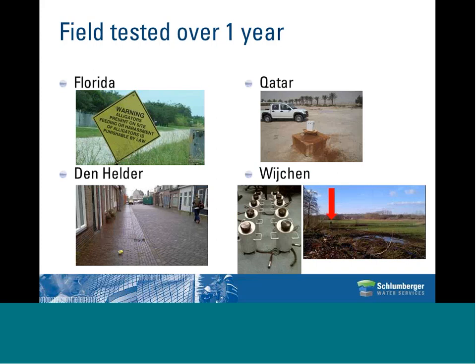Florida is a wet and humid environment—it's where you have the alligators—and we tested there for quite an extensive time. Qatar is a warmer climate with more dust and less humidity. The wellhead shown in the center of the picture is specifically designed to lower the temperature: it's painted white and has holes on top to expel hot air accumulating inside, keeping the temperature to a maximum of around 40 to 50 degrees C.